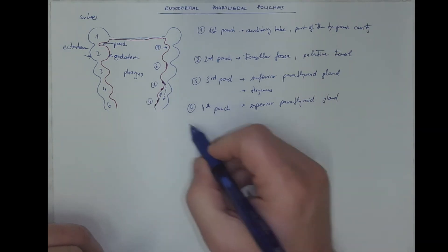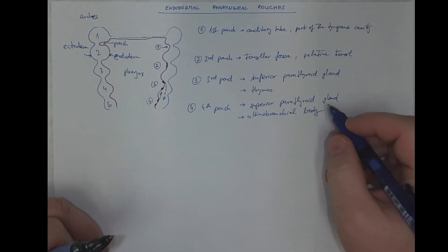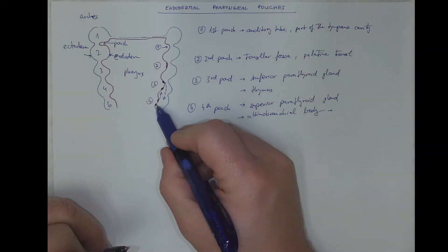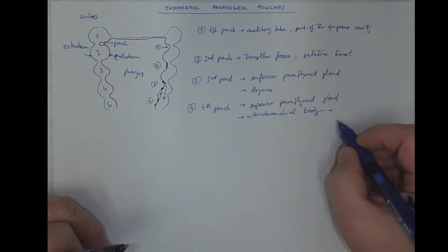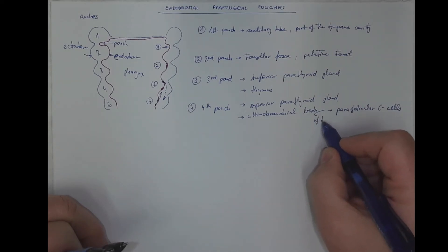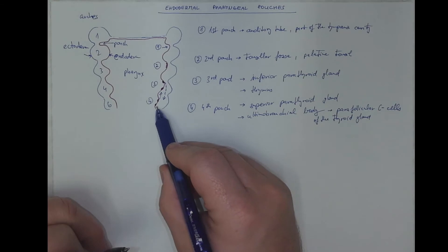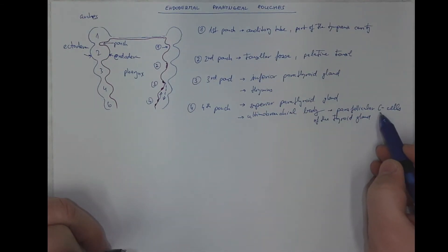And the other organ here emerging is so-called ultimobranchial body, which is at first an organ, a solid organ, but it splits into cells, so-called parafollicular, which are also known as the C cells of the thyroid gland. It's a population of cells that will infiltrate the thyroid gland, becoming its parafollicular cells. Those are special cells producing calcitonin, a hormone that lowers the calcemia, the level of calcium in plasma.